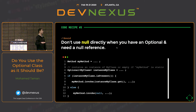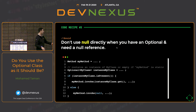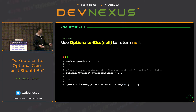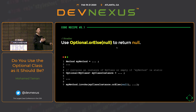Sometimes we need to provide a null reference to certain methods — for example, the Reflection API's method.invoke(), where the first argument should be null for a static method. What if we need a null reference from an Optional? We have a mechanism: use myInstance.orElse(null). If it's present, it returns the value; if not, it returns null. This is an elegant way to handle nullability with Optional.